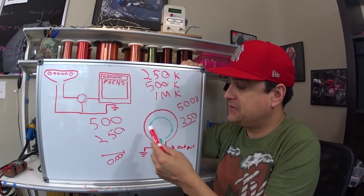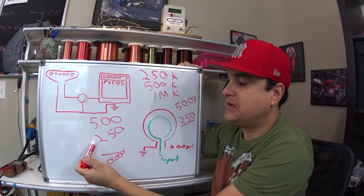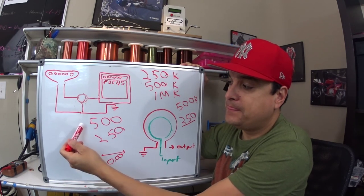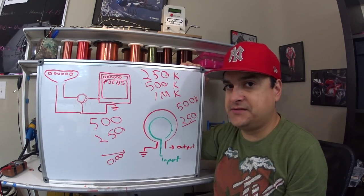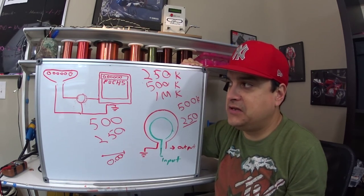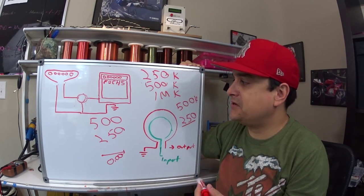But for now, just remember, the shorter path to ground, the lower number, is going to cut out more highs. The higher number, the longer path to ground, is going to cut out less highs. That's exactly, that's basically it. But those are very fundamental things to remember in a guitar circuit.